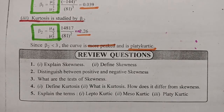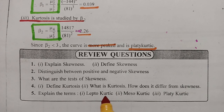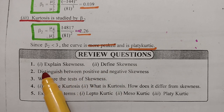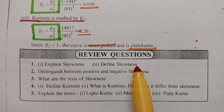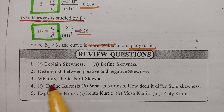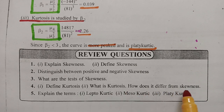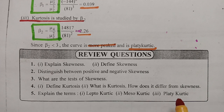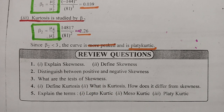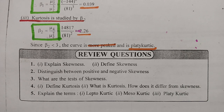These are the review questions: explain skewness and define skewness, distinguish between positive and negative skewness, what are the tests for skewness, define kurtosis, how does kurtosis differ from skewness, and explain the terms leptokurtic, mesokurtic, and platykurtic. All definitions, formulas, and problems are in the playlist. Please share with friends — that is the greatest help to this channel. Thank you for your support and for watching.